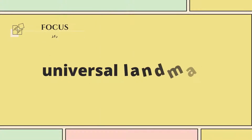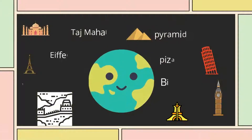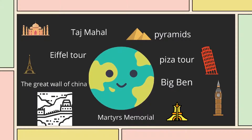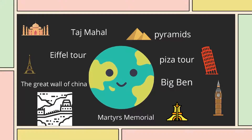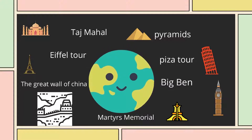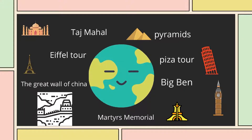Here are some examples of Universal Landmarks: Pyramids in Egypt, Pisa Tower in Italy, Big Ben in England, Martyrs Memorial in Algeria, The Great Wall of China in China, Eiffel Tower in France, Taj Mahal in India.